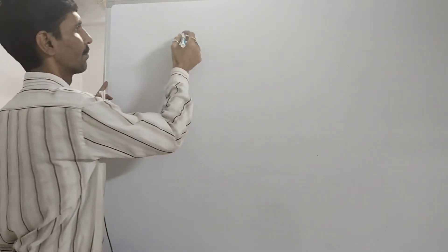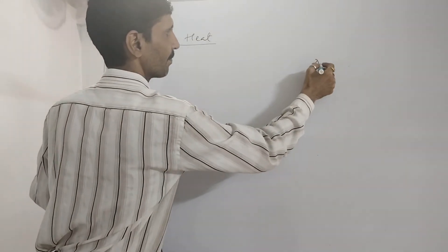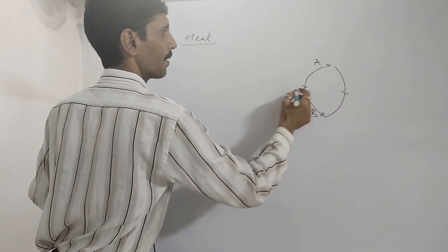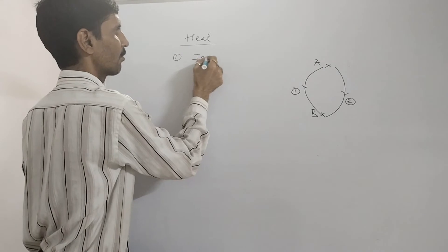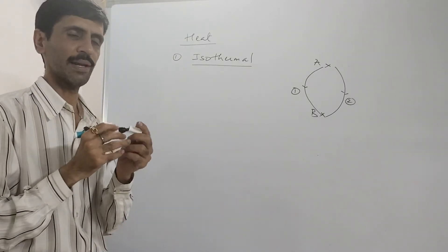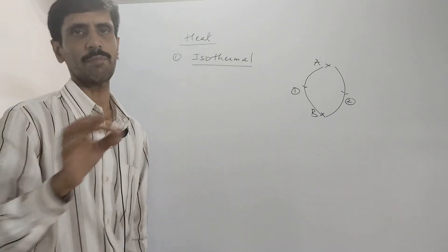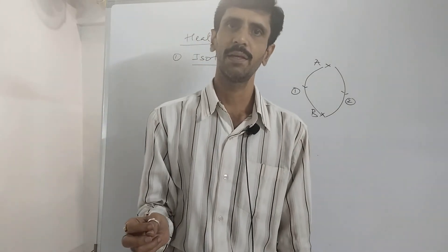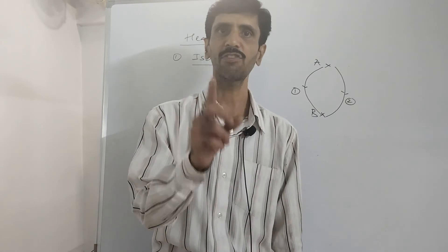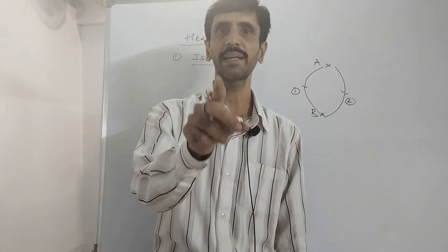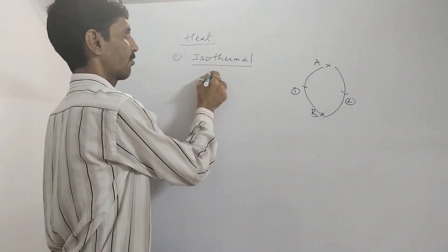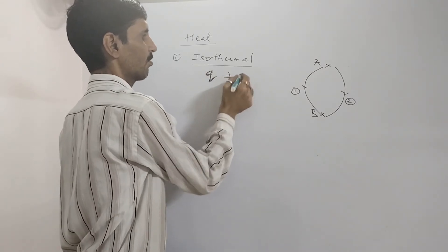When I talk about heat, I consider two cases — A is the initial state, B is the final state. First condition: I consider isothermal, where the temperature remains constant. For the temperature to remain constant, there has to be a flow of heat — either from system to surroundings if it is exothermic, or from surroundings to system if it is endothermic. So for isothermal process, Q is not equal to zero.